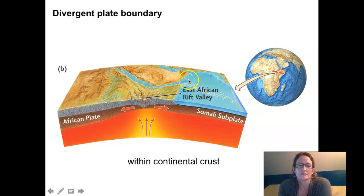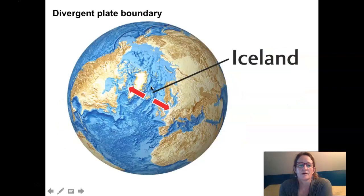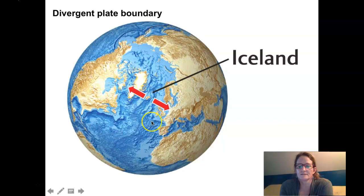Iceland is unique. It sits right along the Mid-Atlantic Ridge. Here's the trace of the Mid-Atlantic Ridge, and Iceland sits right over that plate boundary, the divergent plate boundary in the middle of the North Atlantic.